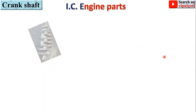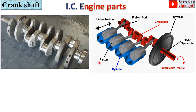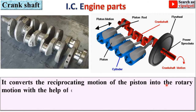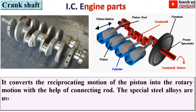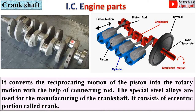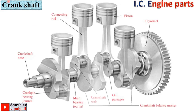Next: crankshaft. Here you can see the crankshaft. It converts the reciprocating motion of the piston into rotary motion with the help of the connecting rod. Special steel alloys are used for manufacturing the crankshaft. It consists of an eccentric portion called the crank — here you can see this eccentric portion — which is attached to the connecting rod.